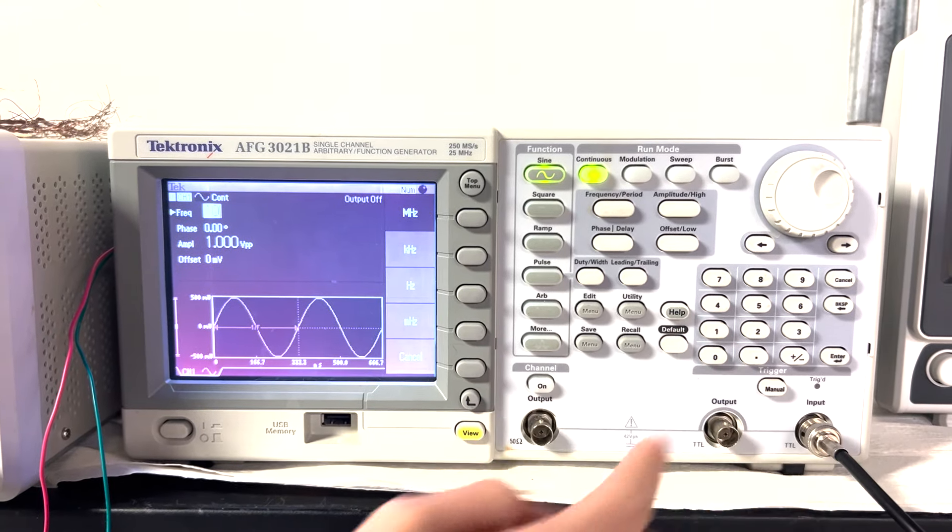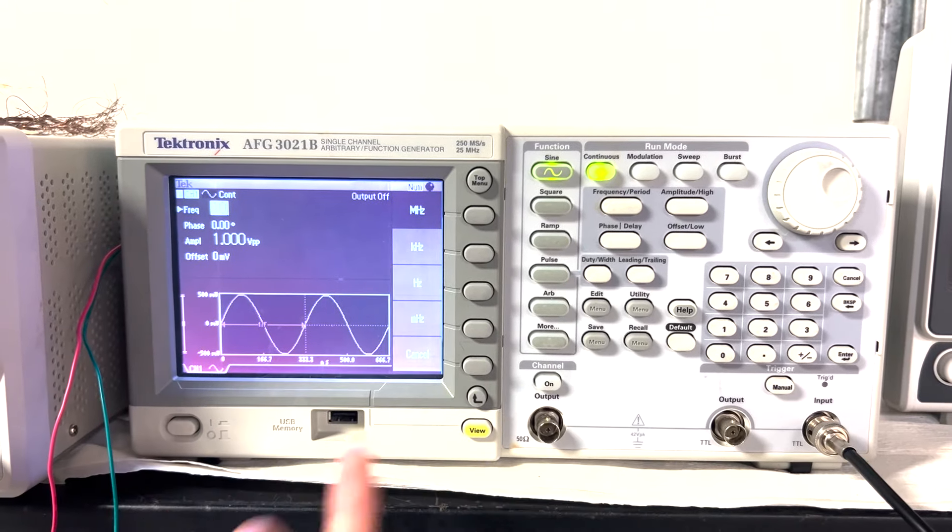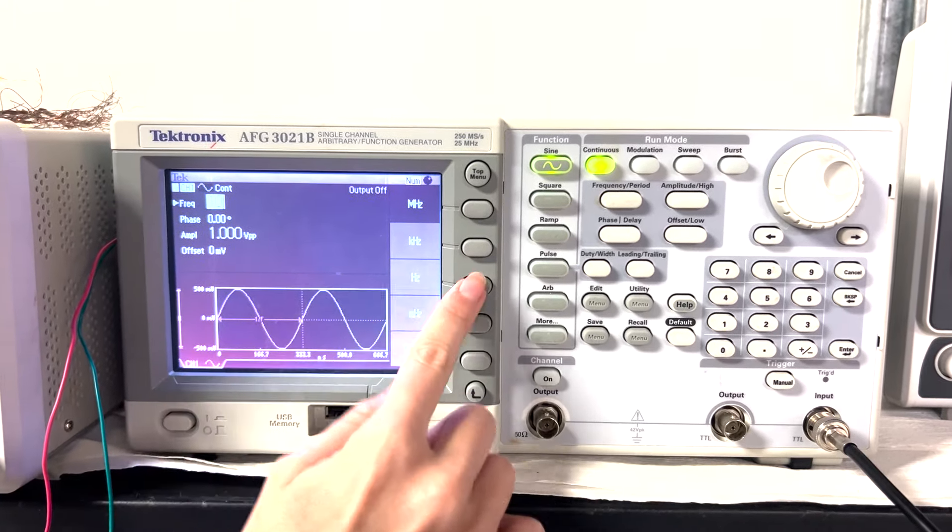So in this case, if I put 10, you have different units. You have megahertz, kilohertz, hertz, or millihertz. In this case, I'm just going to use hertz. So I select hertz.